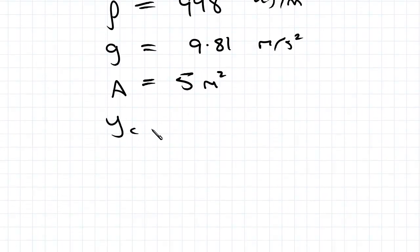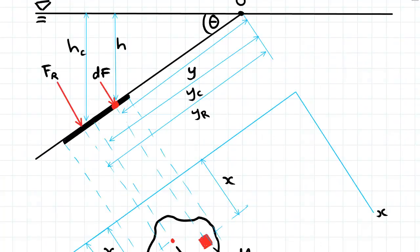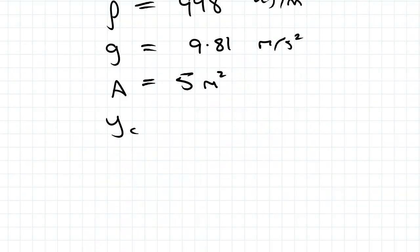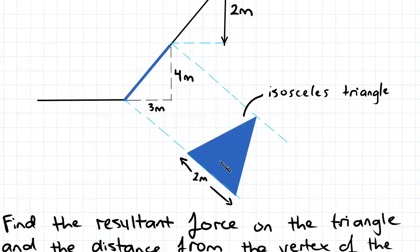Yc is, as we saw in the derivation videos, the distance from the origin at the top of the slope down the slope to the centroid of the shape. In this case, it's the centroid of our triangle, which is a third from the base, a third of the height from the base.